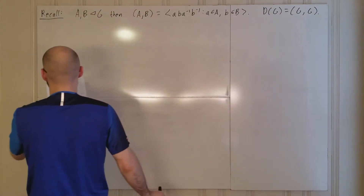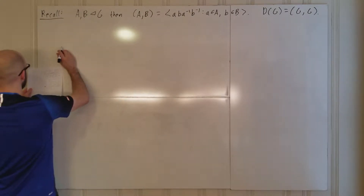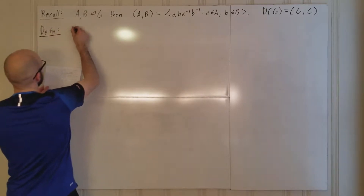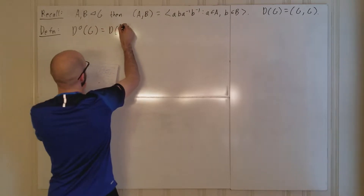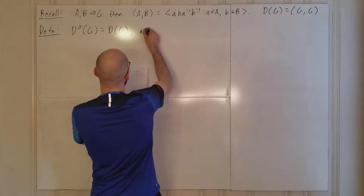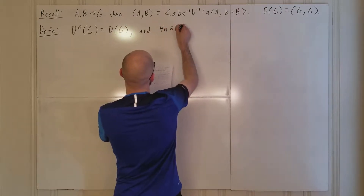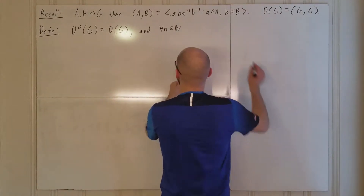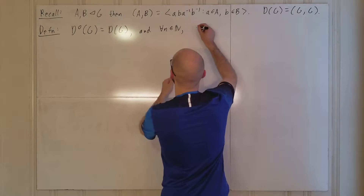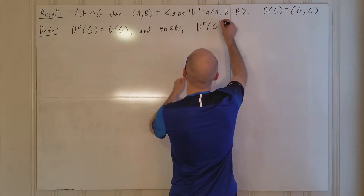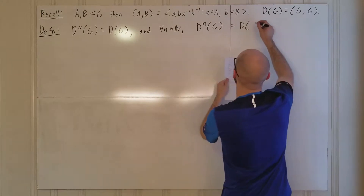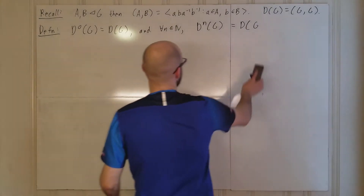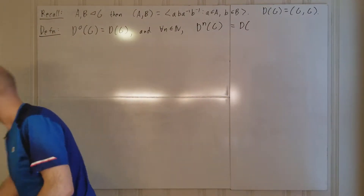Let's set D⁰(G) as just DG, and for all integers n greater than or equal to one — I prefer that notation as an analyst — we define Dⁿ(G) to be D(D^(n−1)(G)).